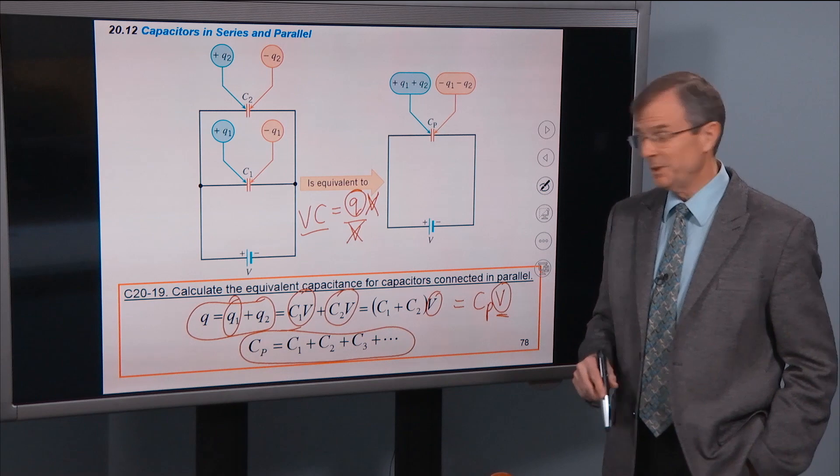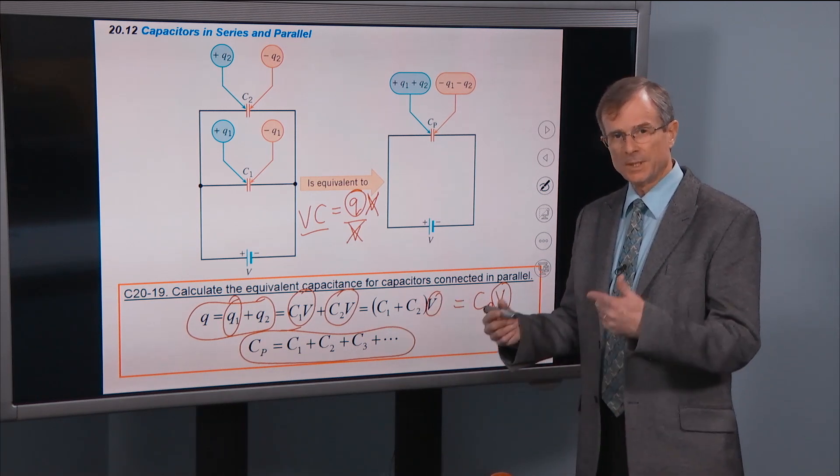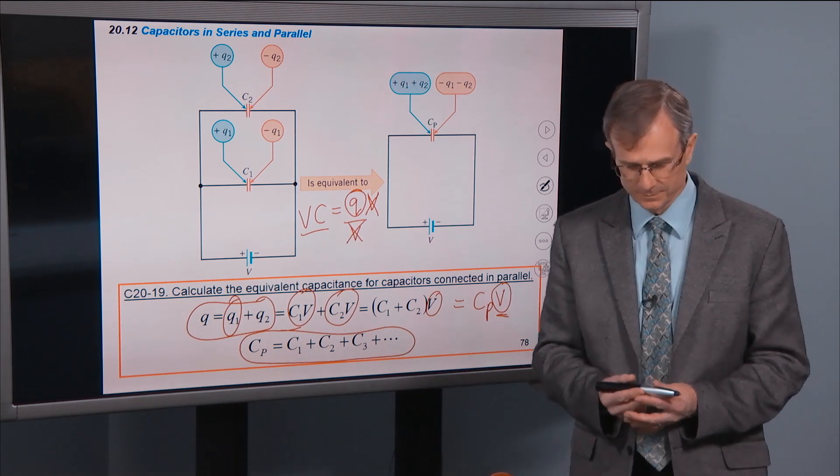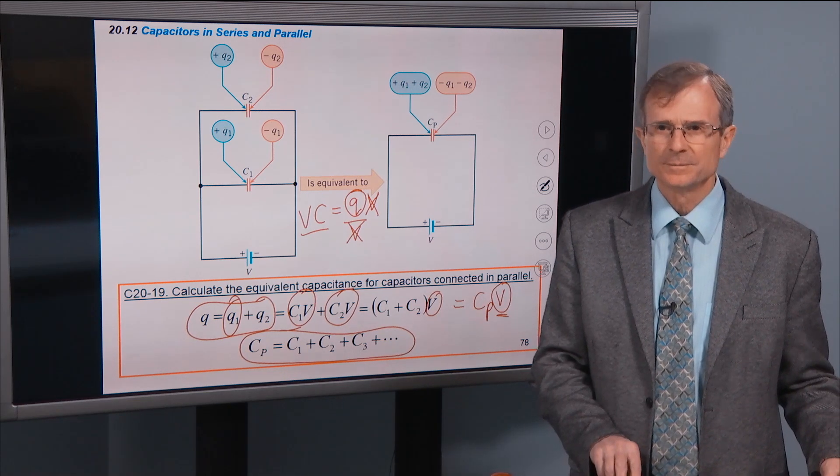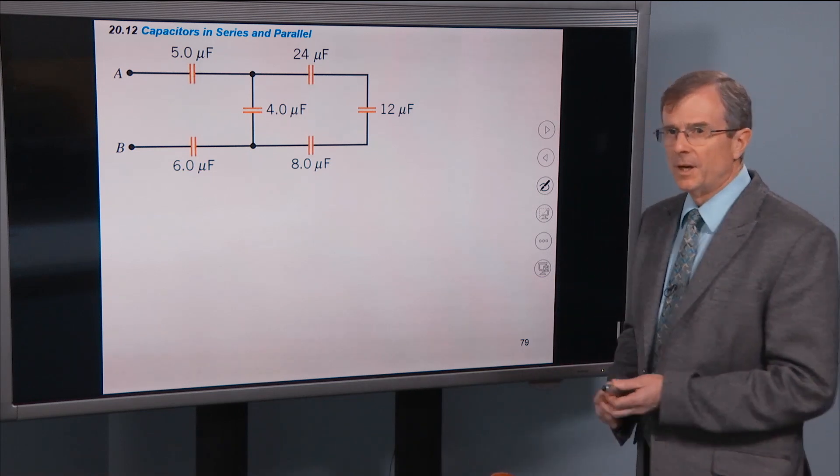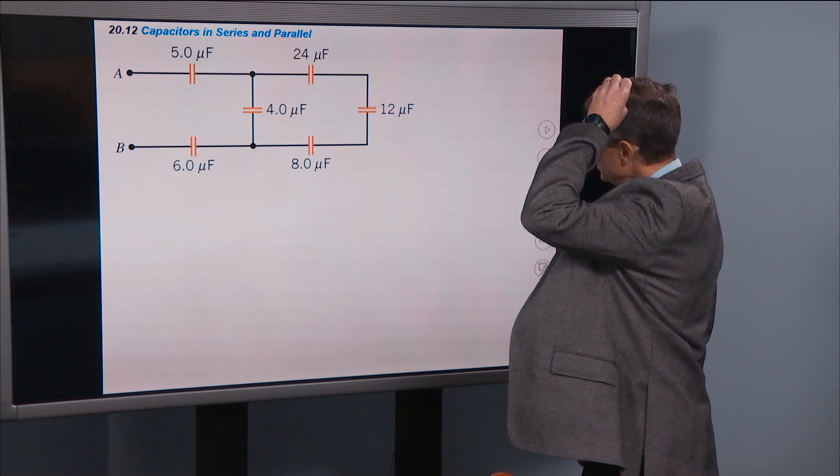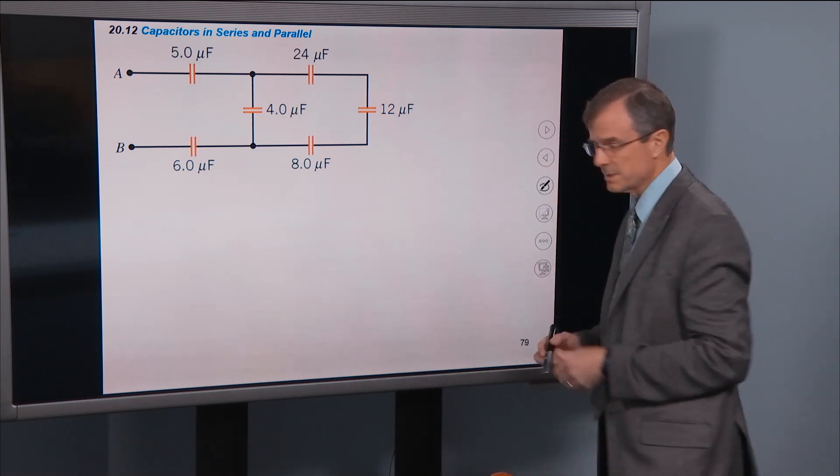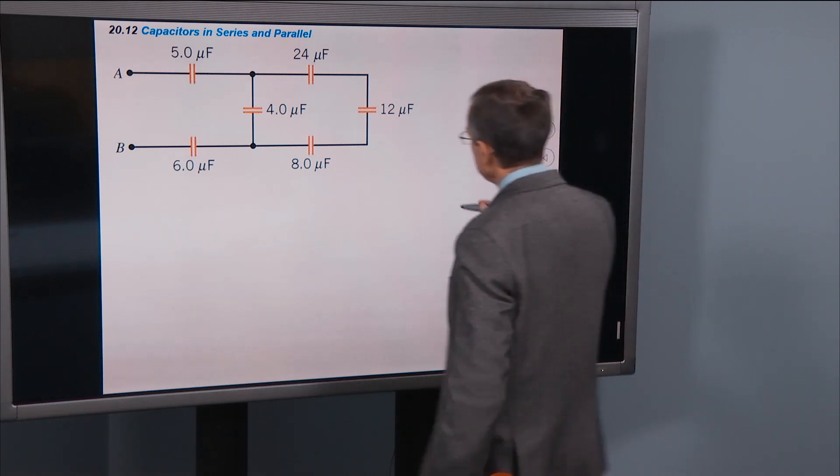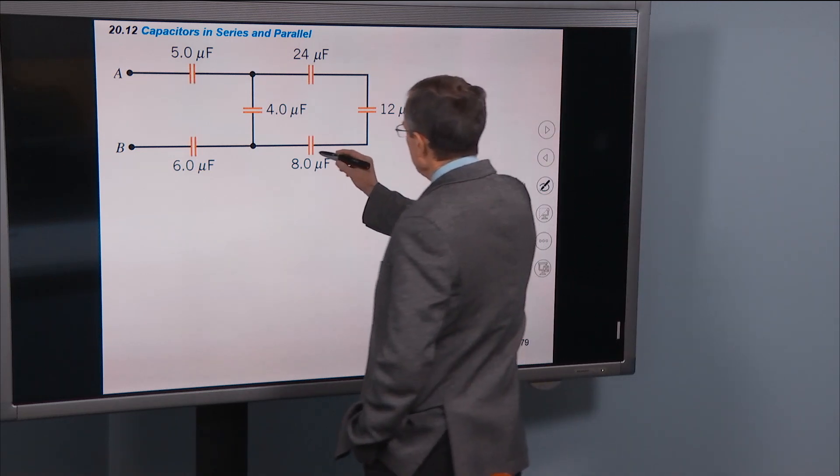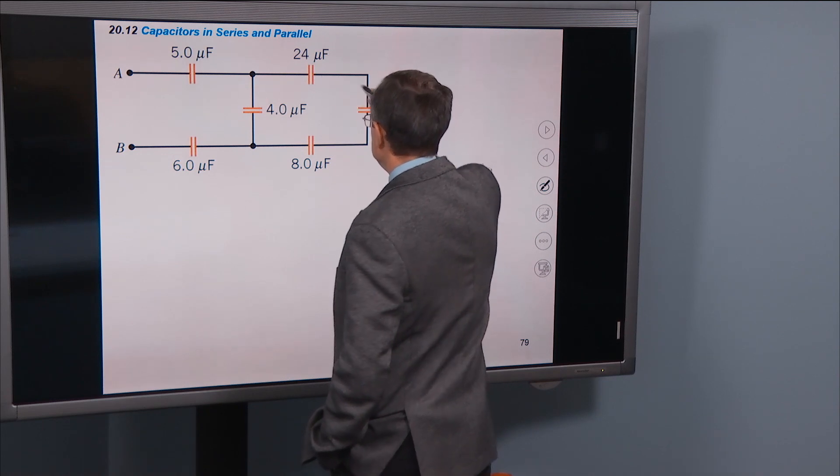Plus dot dot dot for how many capacitors you have. And as you've probably noticed, you just add the capacitors up for capacitors in parallel, as opposed to adding up their reciprocals. Alright, we can now do problems that are similar to the problems that we did for resistors.